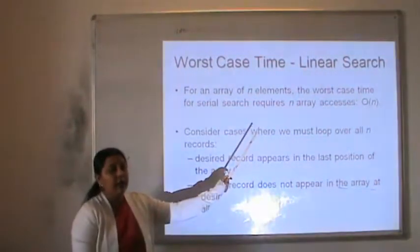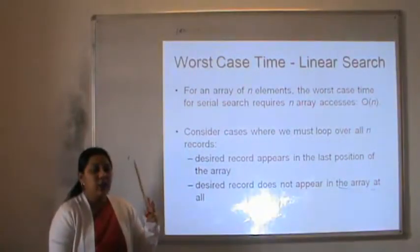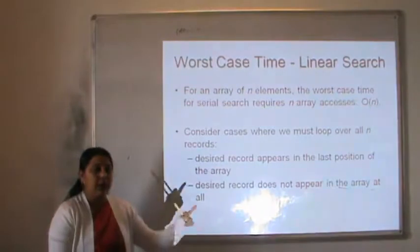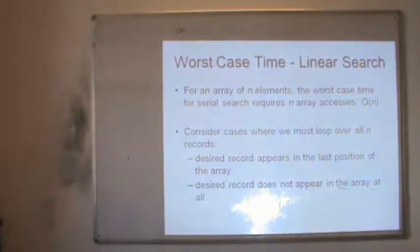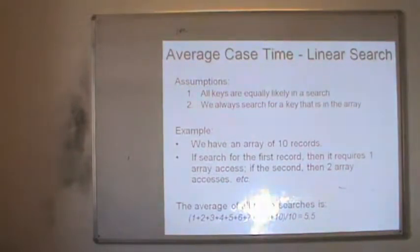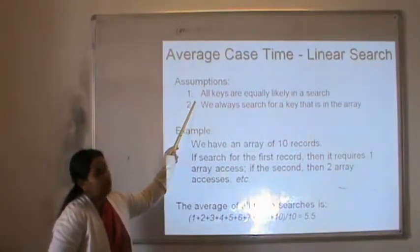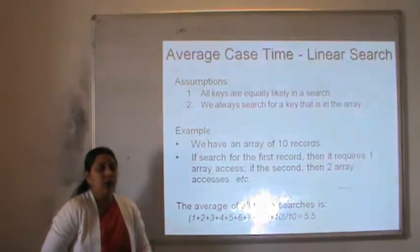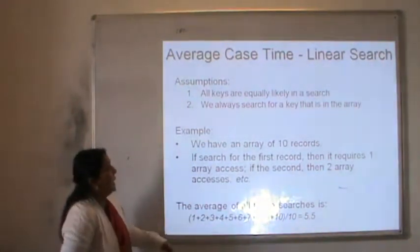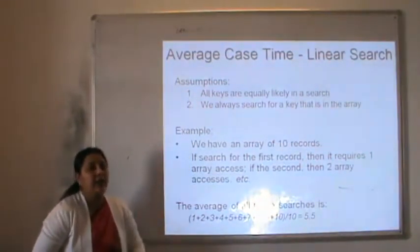The worst case is O(n) because each and every element from the list of array of size n is inspected in two cases: one, the element is positioned at the last place; and two, the element is not present in the list at all. Now let us consider the average case time. We assume that all the keys are equally likely in a search and the key we are searching for is present in the array.